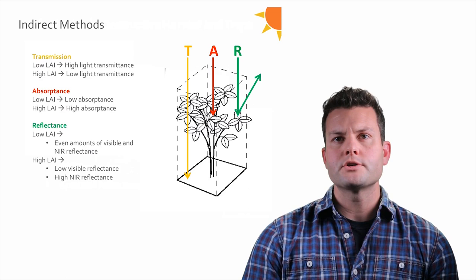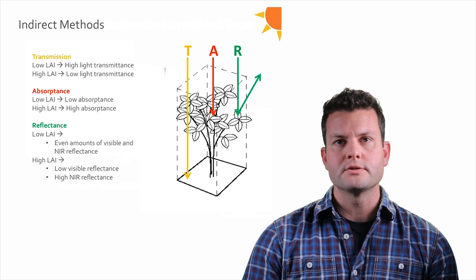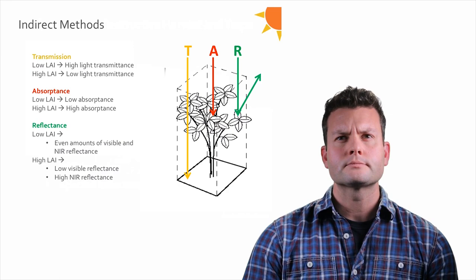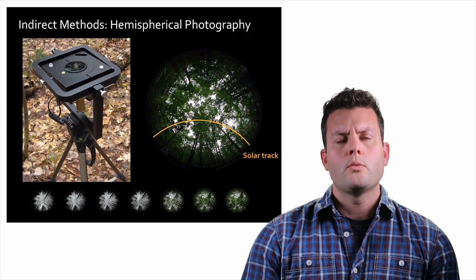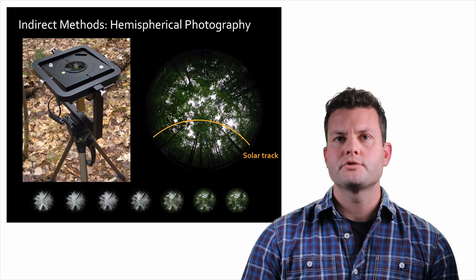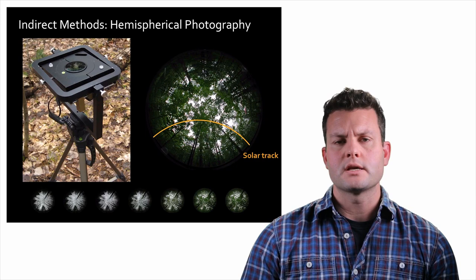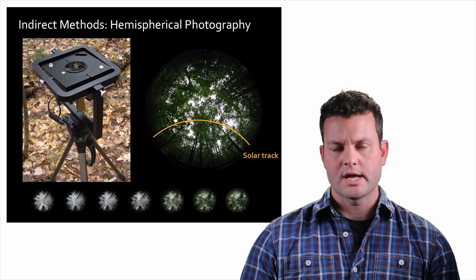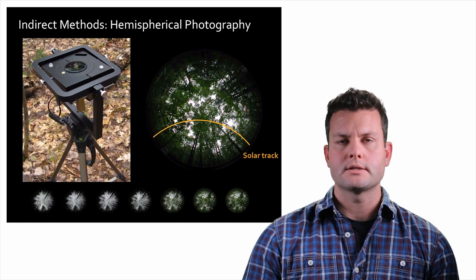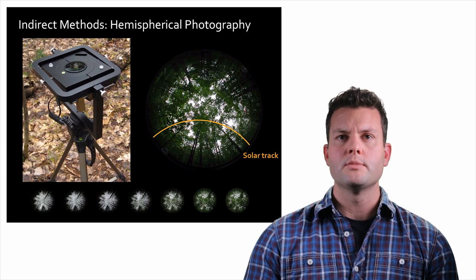Hemispherical photography essentially uses measurement of transmitted light to estimate LAI. It's a well-established method that uses a camera with a fisheye lens attached to a leveling deck, pointed upward beneath the canopy facing the sky, imaging the canopy from below in a hemisphere.